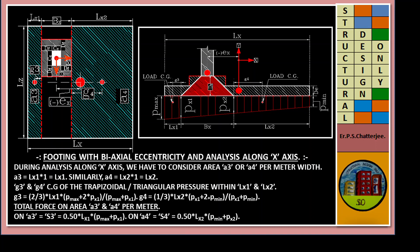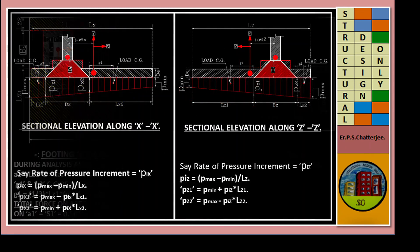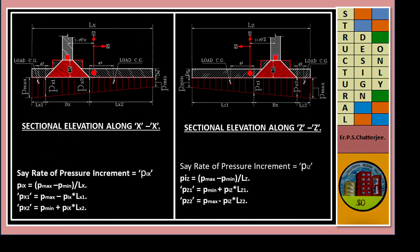Footing with biaxial eccentricity. This is plan and this is elevation. This is from Z-axis. Now pressure at this portion, that is D from column face. This is PX1 and this is also D from column face, PX2. This is PZ1, this is PZ2. This is the rate of pressure increment PIX.